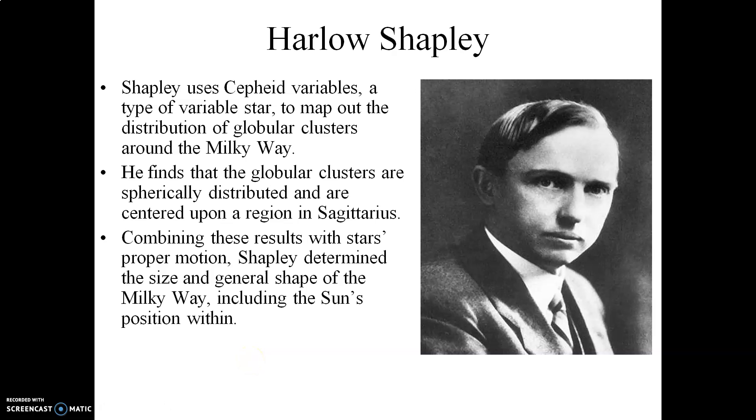In the early 20th century, we get to this man, an American astronomer named Harlow Shapley. Shapley used a specific type of variable star called a Cepheid variable to map out the distribution of globular clusters around the Milky Way. He finds that the globular clusters are spherically distributed around the Milky Way, and they're centered upon a region in the direction of the constellation of Sagittarius.